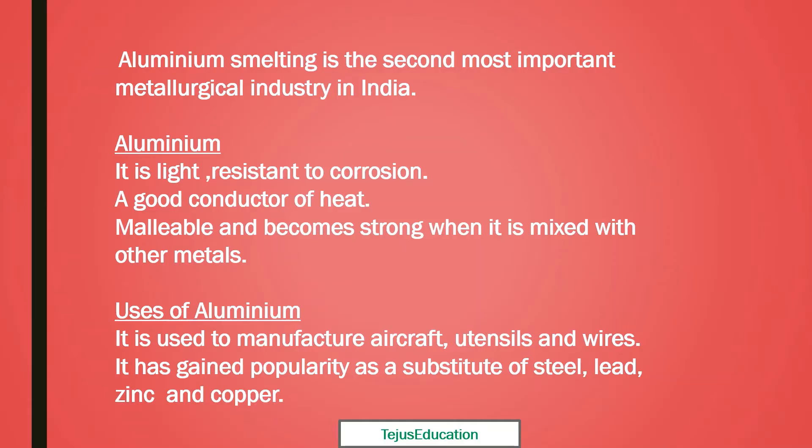Uses of aluminium: it is used to manufacture aircraft, utensils, and wires. It has gained popularity as a substitute for steel, lead, zinc, and copper. Hope this is clear, children.